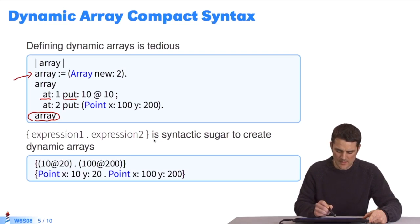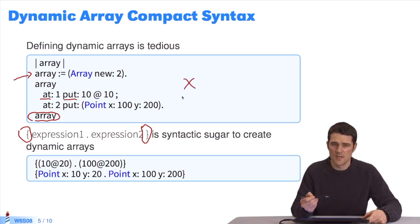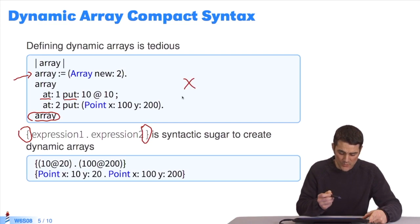But we also have a specific syntax called syntactic sugar, which is made with braces. These braces enable me to write exactly what I wrote above, only faster and more concisely. But it's the same thing. This means I will use braces and put a set of expressions separated by dots, which will be evaluated to create the collection.